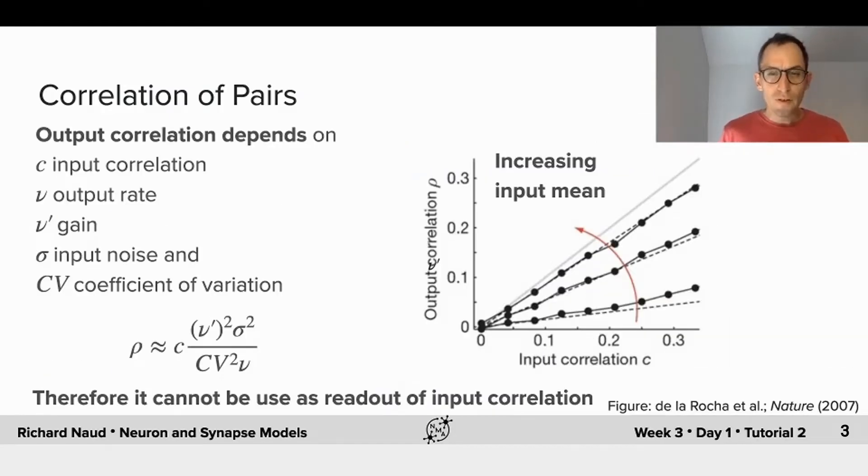If you do the simulation with leaky integrate and fire neurons and you plot the input correlation and the output correlation, you see that yes the output correlation is generally increasing as a function of the input correlation, but that's not the only feature of the input that is being communicated here.